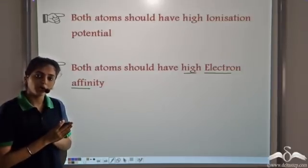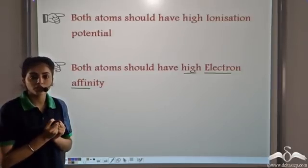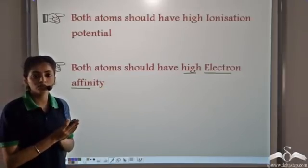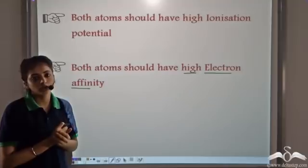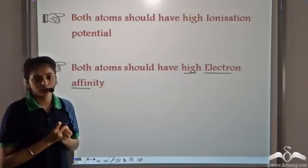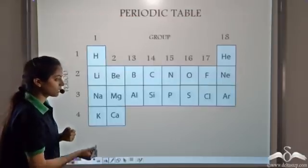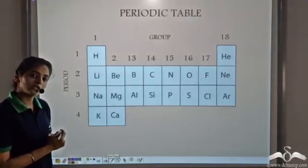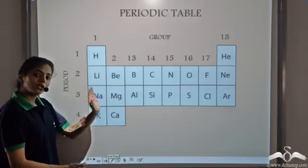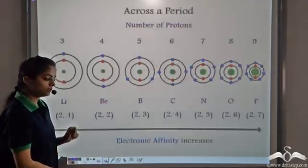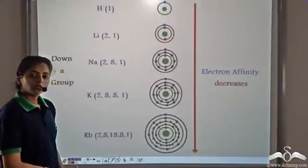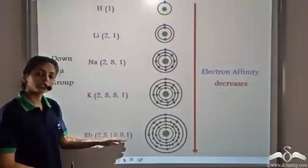In covalent compounds, there is sharing of electrons. So the essential condition is that both the atoms should have a high electron affinity, so that both of them can equally share the electrons. When we move from left to right in a periodic table, the electron affinity increases. When we move from top to bottom in a group, the electron affinity decreases.